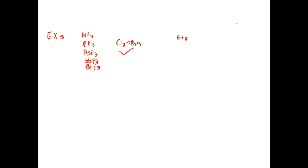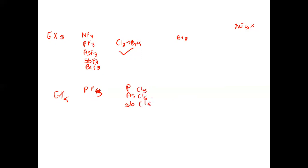In Group 15, all elements form chloride and bromide trihalides. Only nitrogen does not form triiodide; all others do. For pentahalides: all elements excluding nitrogen form pentafluoride. For pentachloride, only phosphorus, arsenic, and antimony form it. Phosphorus alone forms pentabromide, and phosphorus forms no pentaiodide.